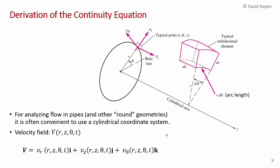For analyzing flow in pipes and other naturally round geometries, it's convenient to use a cylindrical coordinate system. Instead of x, y, z, we now have r, z, and theta — a radius, an axial distance z, and an angle theta. A point is defined by coordinates r, theta, z, and we have three velocity components: vr, vz, and vtheta, as shown in the diagram.